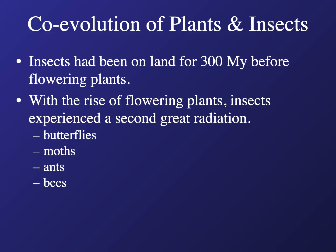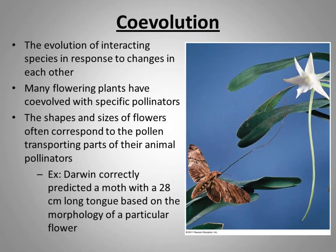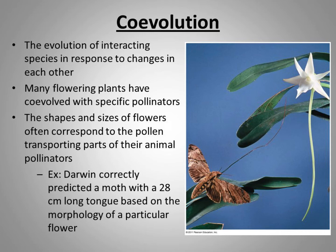Co-evolution is the evolution of interacting species in response to changes in each other. As one species changes — because evolution is always acting on an organism — and there are other pressures like climate change acting on both plants and insects, those changes ripple between the two. As plants change, the insects change with them because insects are so dependent on plants. And as insects change, plants correspondingly change. A change in one species dramatically affects the other, forcing evolutionary pressure that causes natural selection to select for better fits.